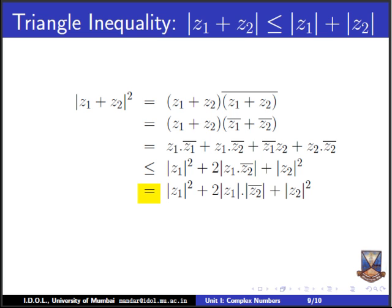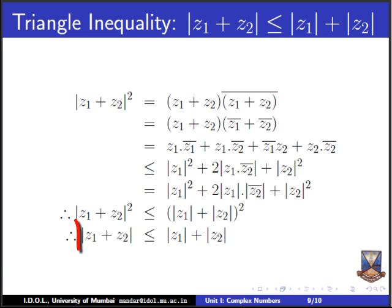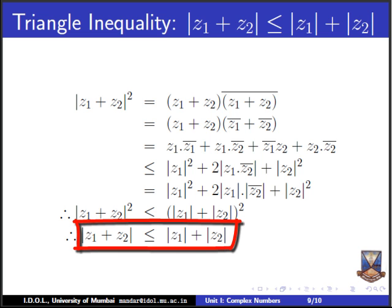Using that |Z̄2| = |Z2| and that modulus of product is product of moduli, we get |Z1 + Z2|² ≤ |Z1|² + 2|Z1||Z2| + |Z2|² = (|Z1| + |Z2|)². Therefore |Z1 + Z2| ≤ |Z1| + |Z2|. This is a very powerful and useful result.